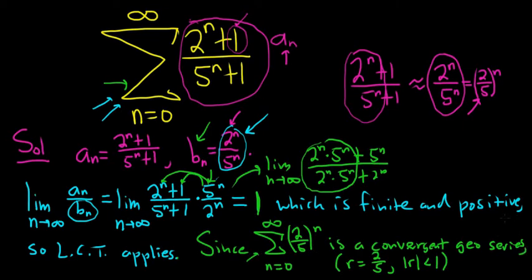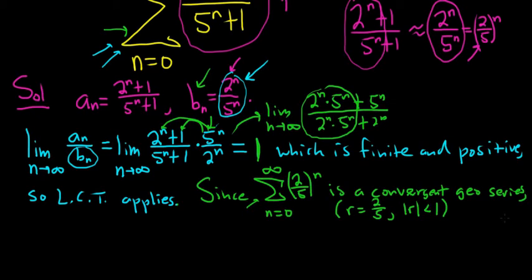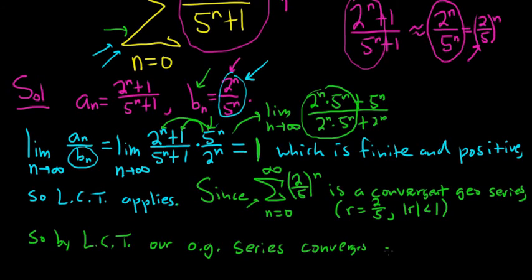So by limit comparison, our series should converge as well. So by LCT, our original series, I'll just say our OG series, OG means original, converges as well.